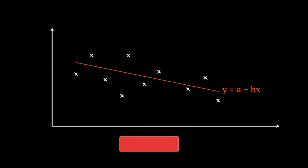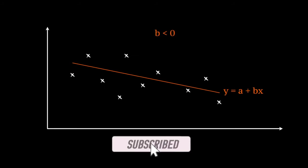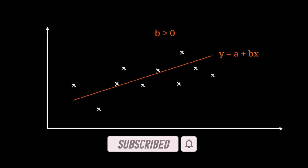Therefore, for negatively correlated data, b, the gradient of the line, will be negative, and for positively correlated data, b will be positive.